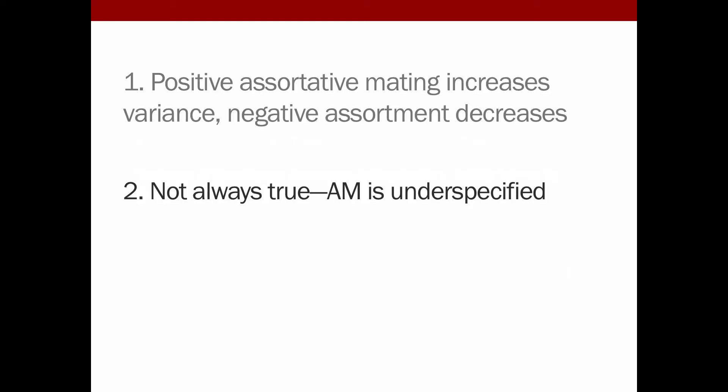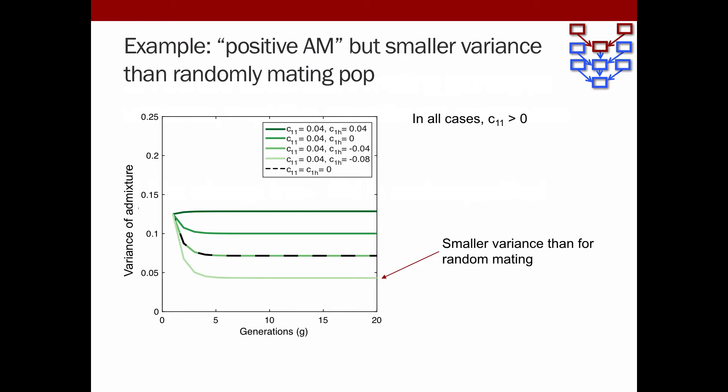So we have this idea that positive assortative mating increases the variance, but it's not always true. Under our model, we demonstrate that this concept of assortative mating is kind of ill-defined, it's underspecified. There are more variables that you have to explain than what we really do when we usually think about assortative mating. For example, using one example, here is the same plot where we have the onset of admixture on the x-axis, and the variance of autosomal ancestry on the y-axis. And we see a case here where despite C11, the preference for S1 to itself, and despite CHH, the hybrid population for itself, both being positive—so this is what many people would consider assortative mating—we have this example here where the variance is smaller than that of the dashed line here, random mating. So what's going on?